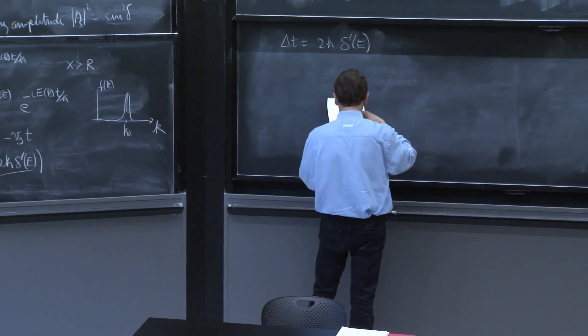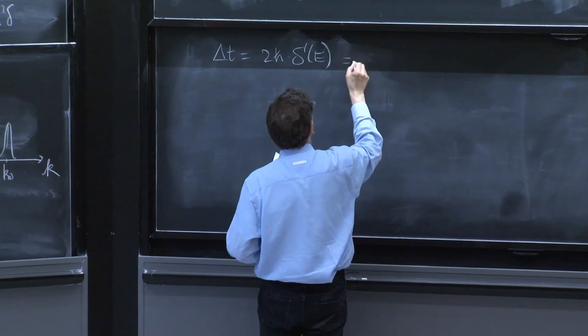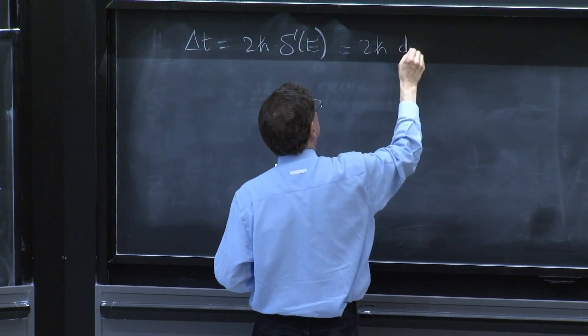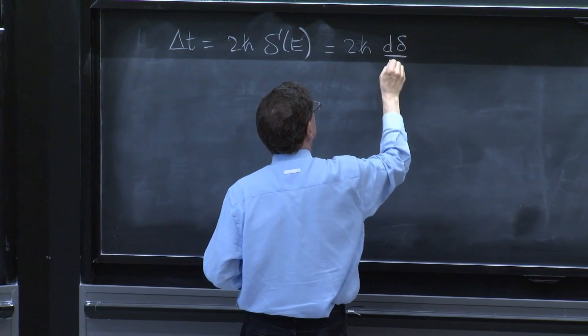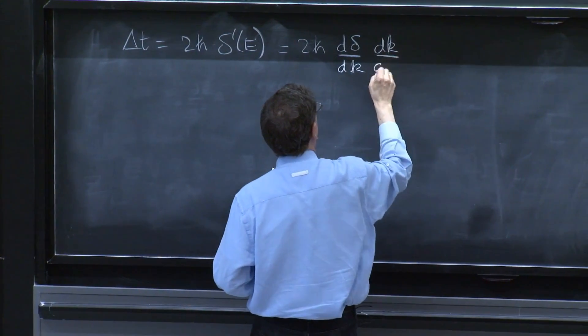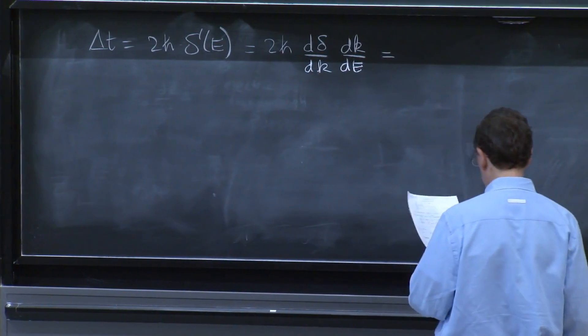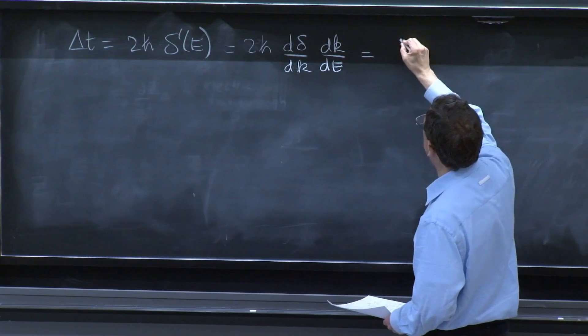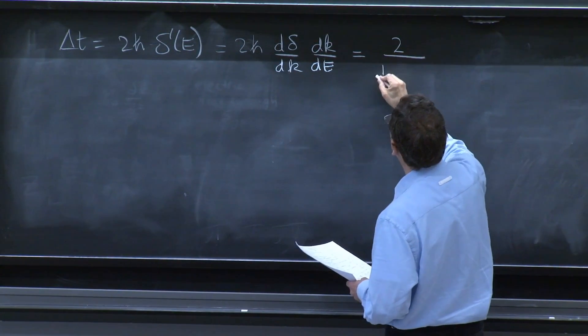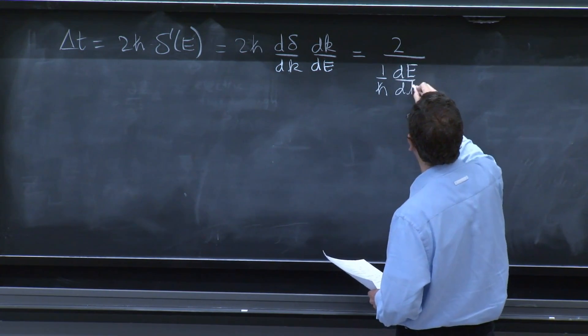And then k with respect to energy. So d delta with respect to k and dk with respect to energy. This is 2 over 1 over h bar dE with respect to k.